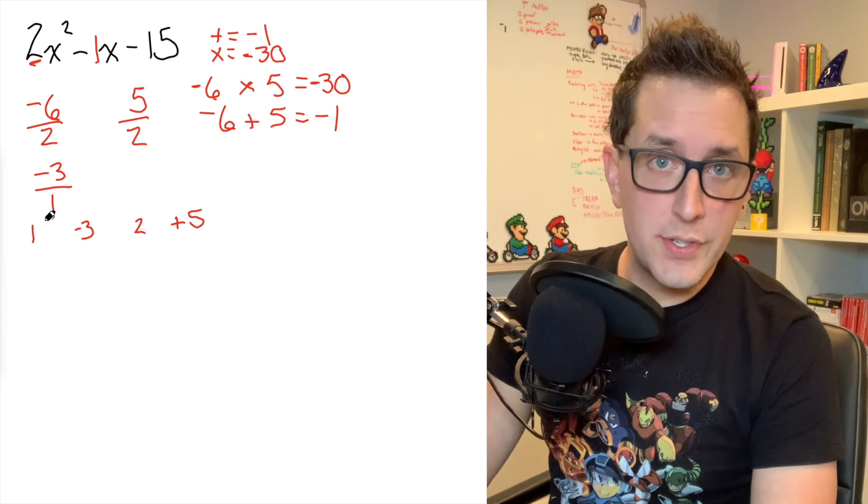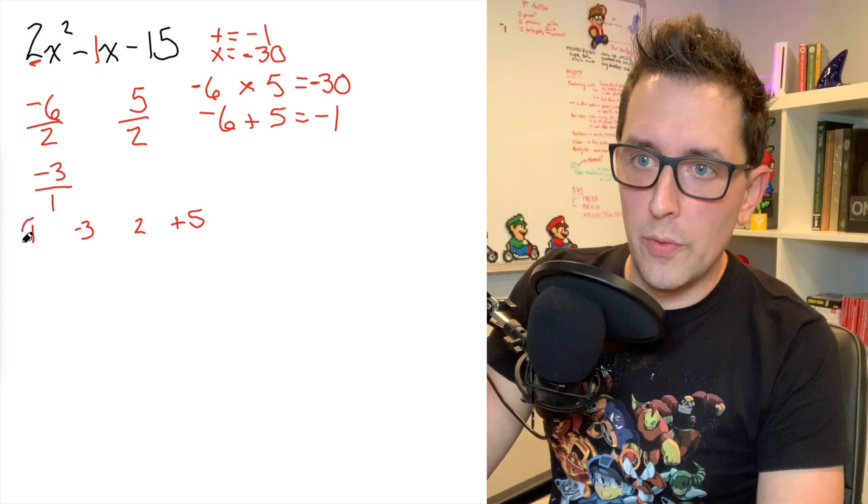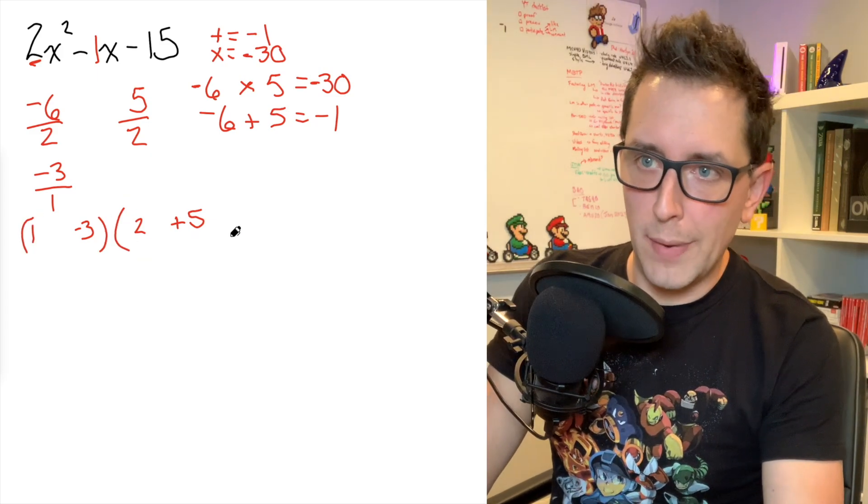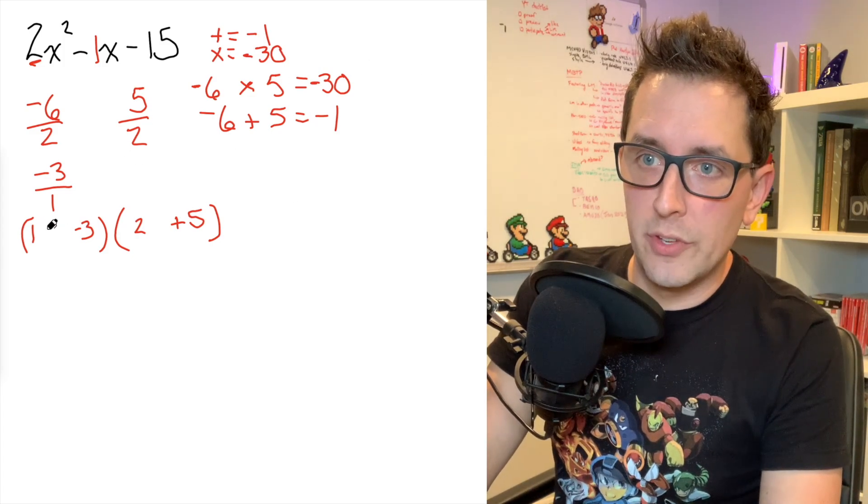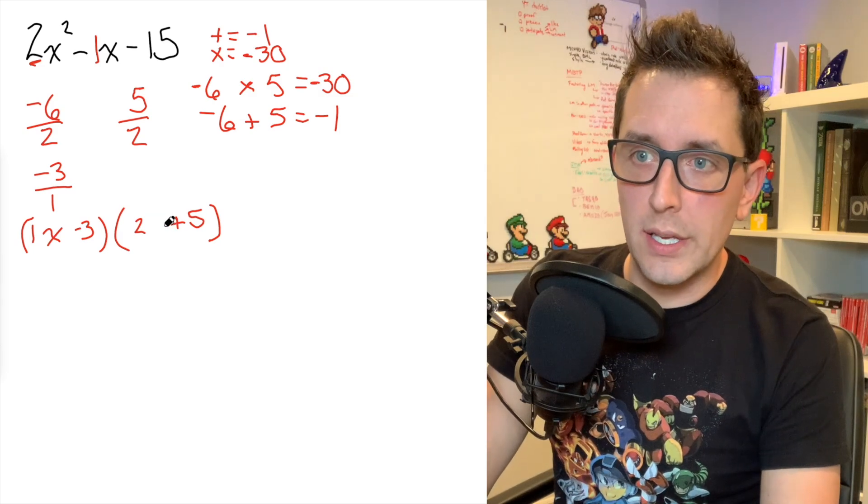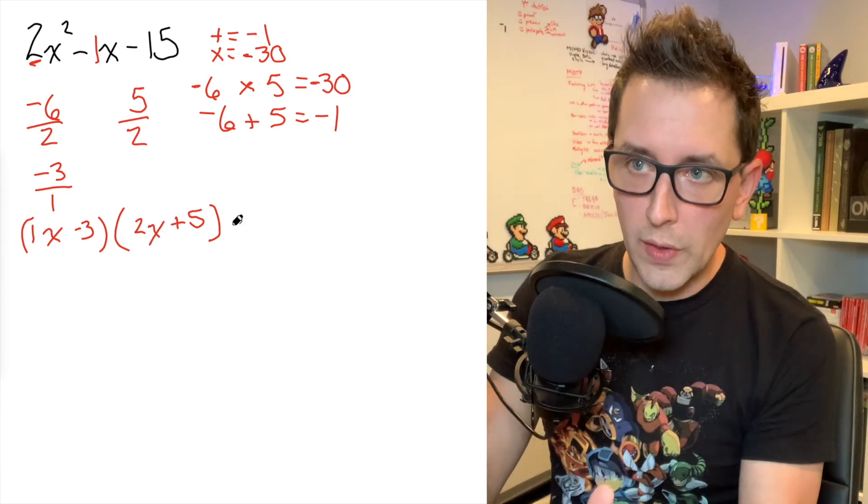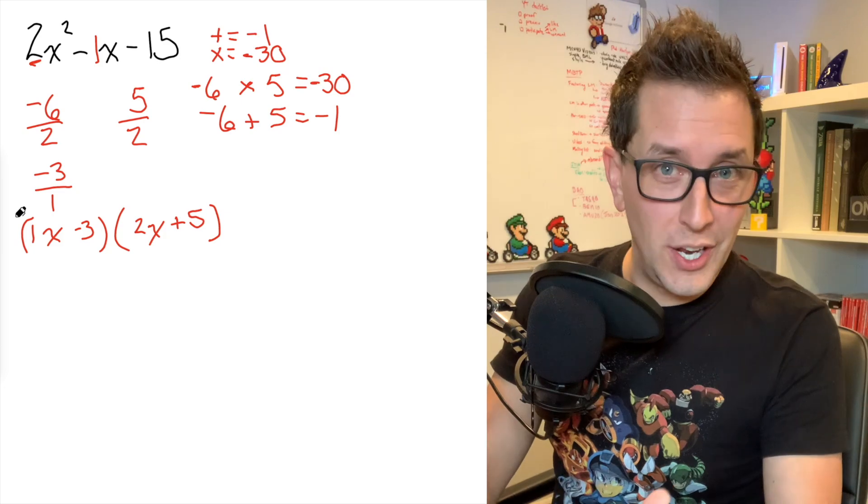And the last thing we're going to do is just slap some brackets around these pairs of numbers so that we can start making some sort of factored form expression here. Remember last thing is just putting an X next to the first number in each set of brackets. And you will end up with a factored form expression for this trinomial.